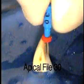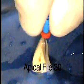Again, as with the shaping files, we use file-ease, we file with the file, and then we irrigate with sodium hypochlorite.